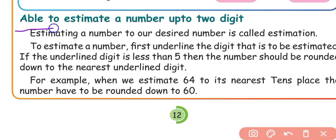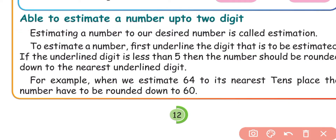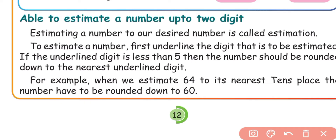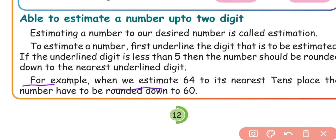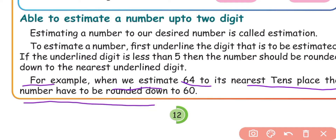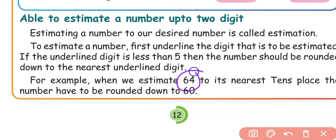Next, we learn to estimate a number up to two digits. How do we estimate a two-digit number? Estimating a number to our desired place value is called estimation. To estimate a number, first underline the digit that is to be estimated.